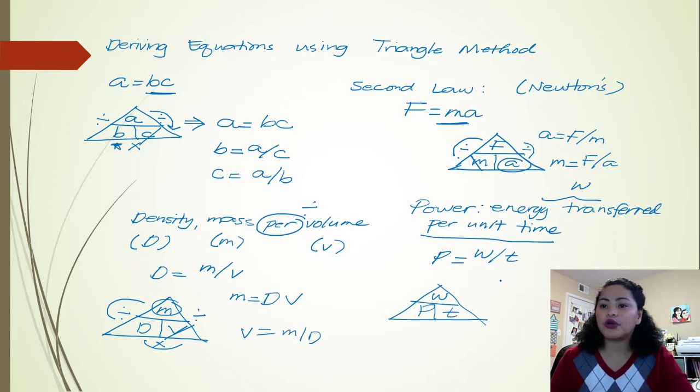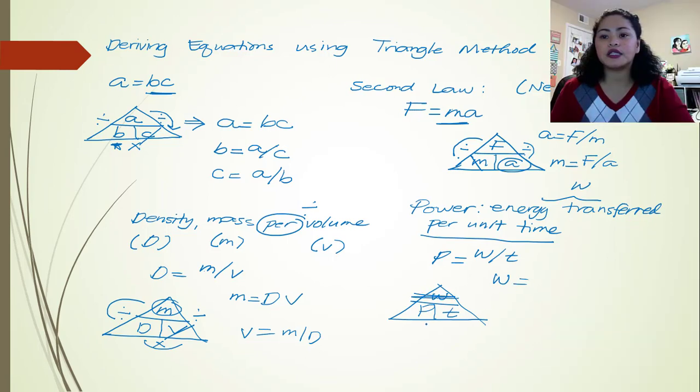So if we are going to calculate for work, so we have here P and T remaining. So that's going to be P times T, right? If we are going to solve for time, say I did not crash on W. So we have here W is on top and P is the divisor. So it will be W over P. That's it.